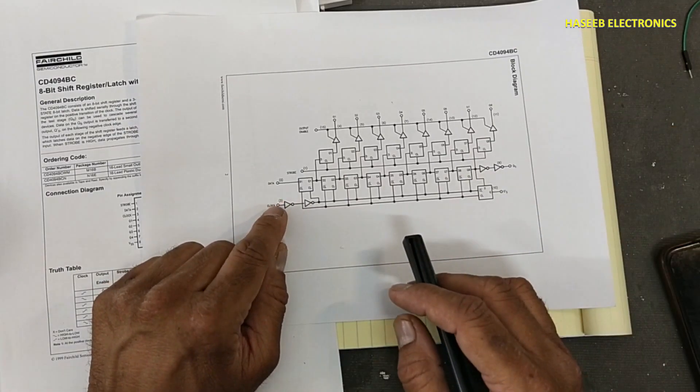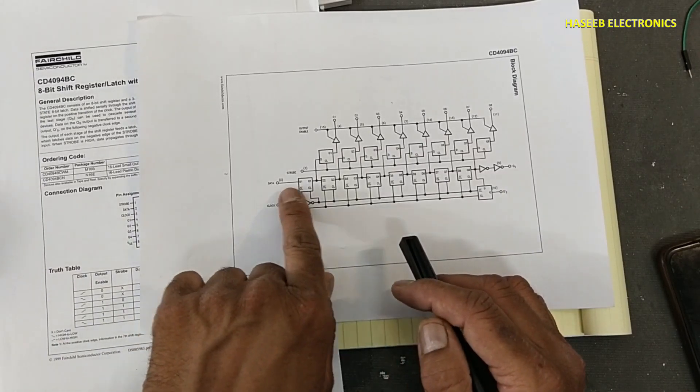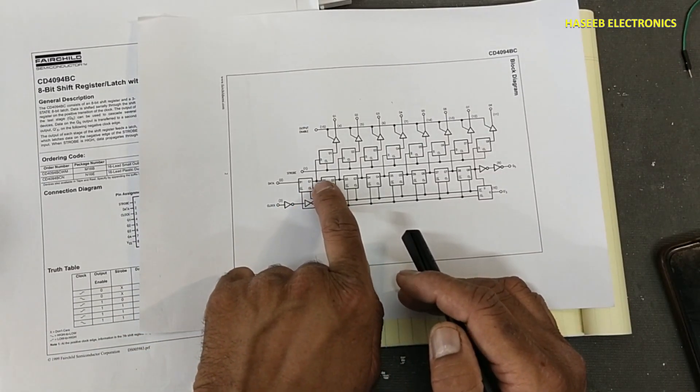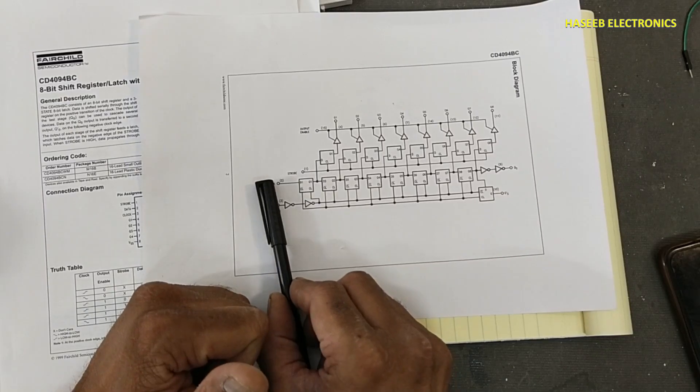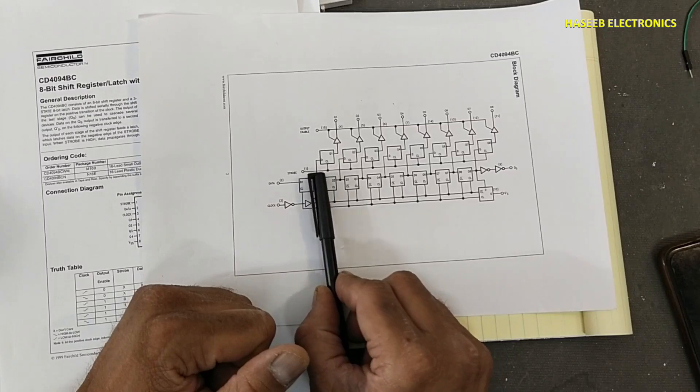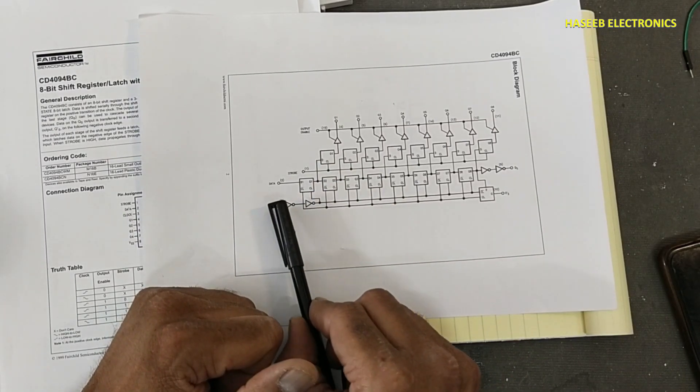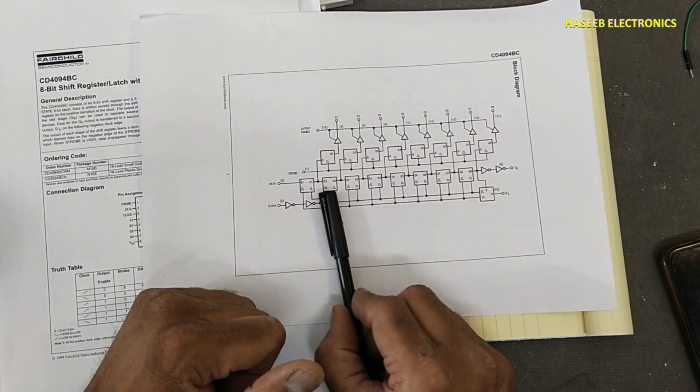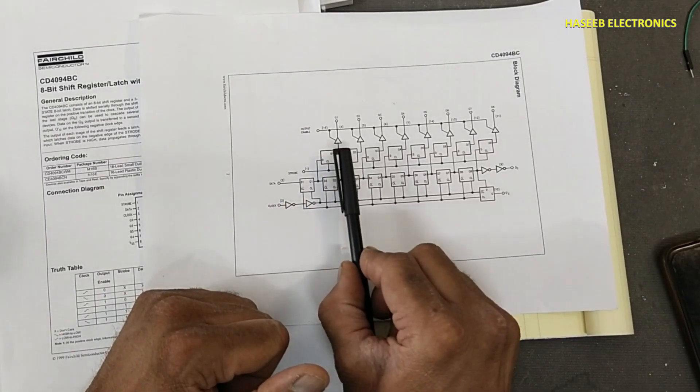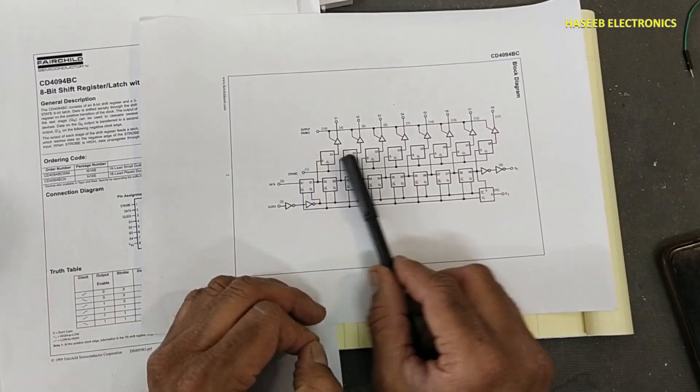Data present at that clock position will transfer to the first flip-flop. Data injected from this pin will shuffle from one flip-flop to the second to the next with change in the clock. At each clock pulse this data will move step forward and it will keep shuffling.